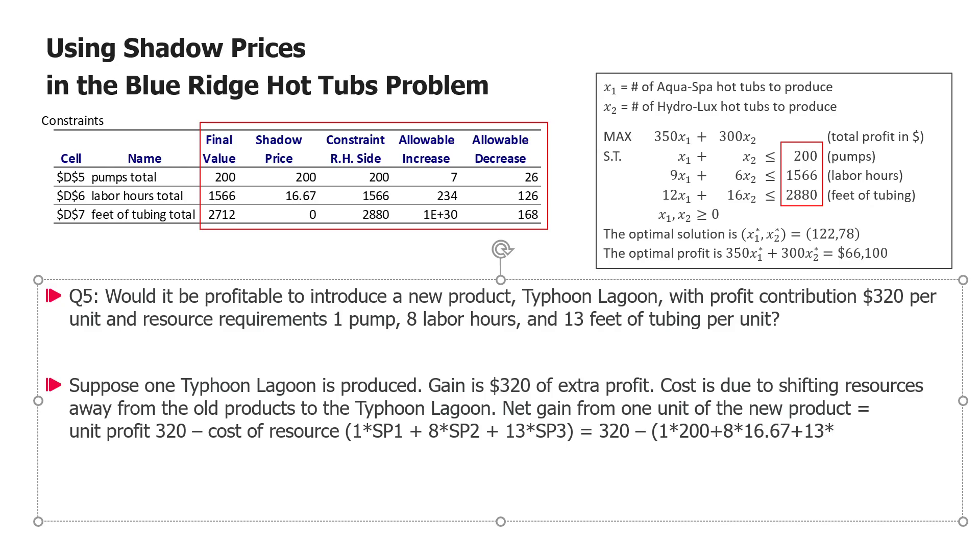So if we do the calculation here it will be 320 minus this is 200 dollars and this is another 133 so in total it will be 333.33. So the net gain will be minus 13.33, it's a negative gain meaning that actually the effect will be that we will lose more than we will gain.